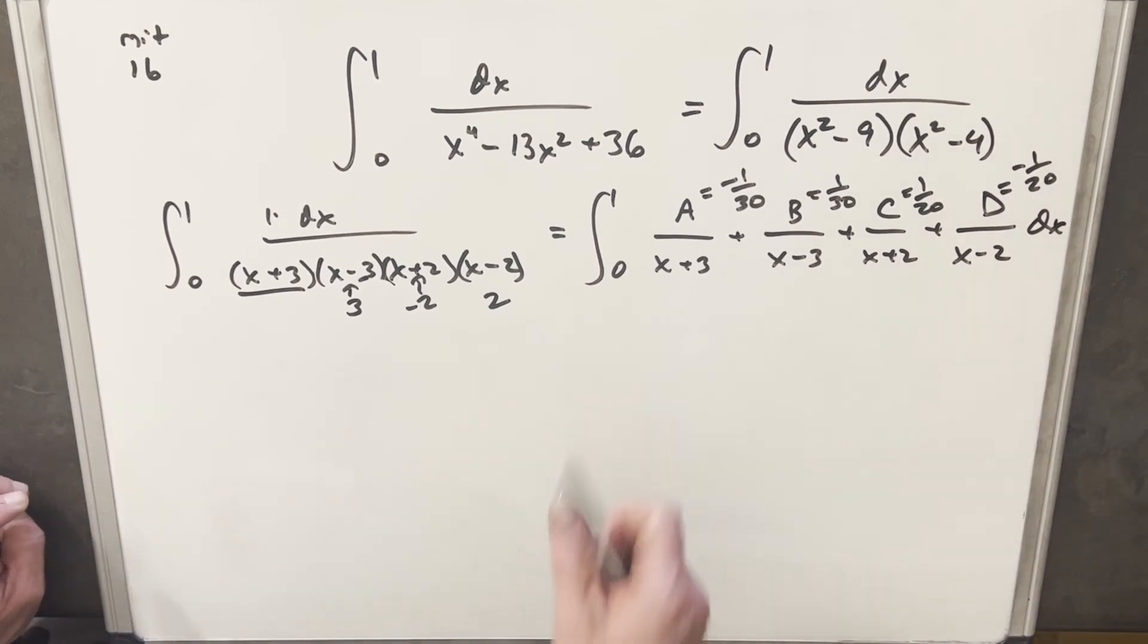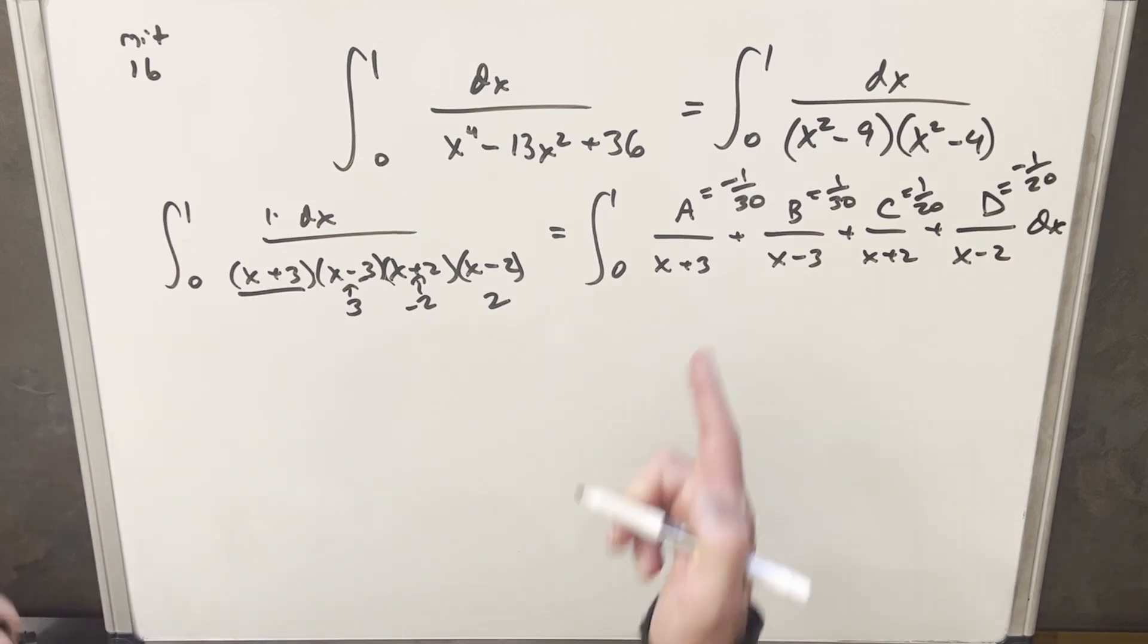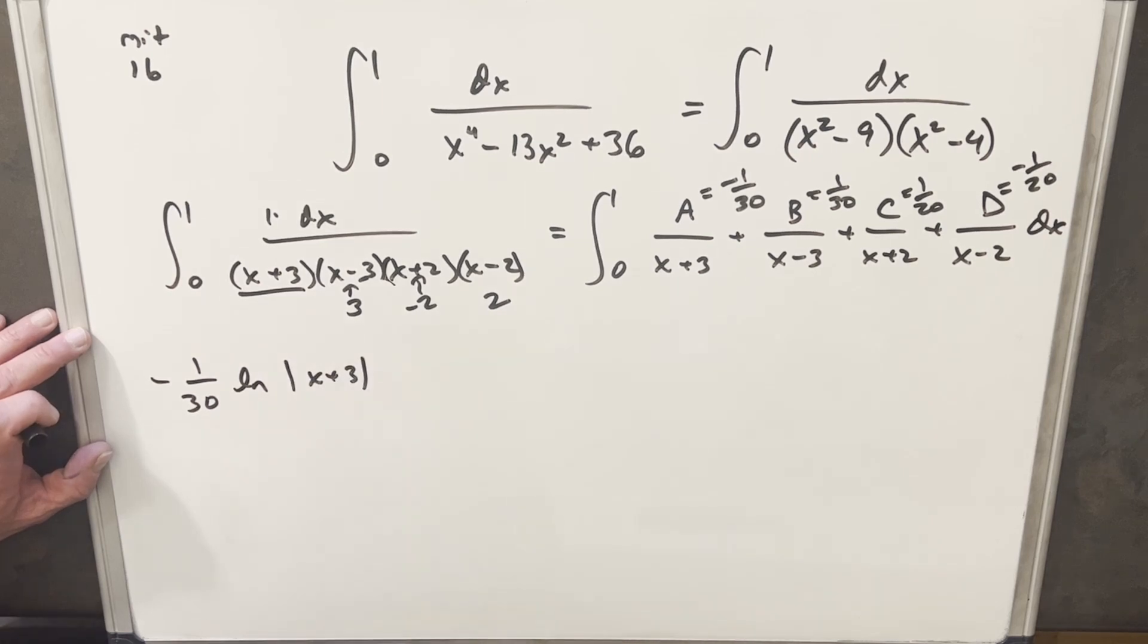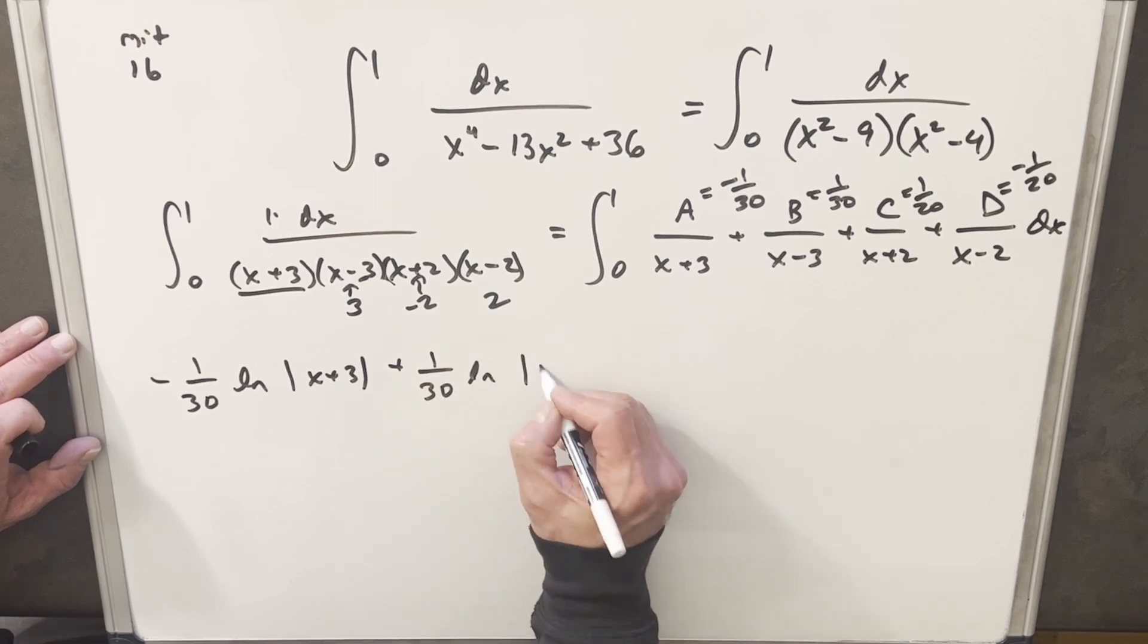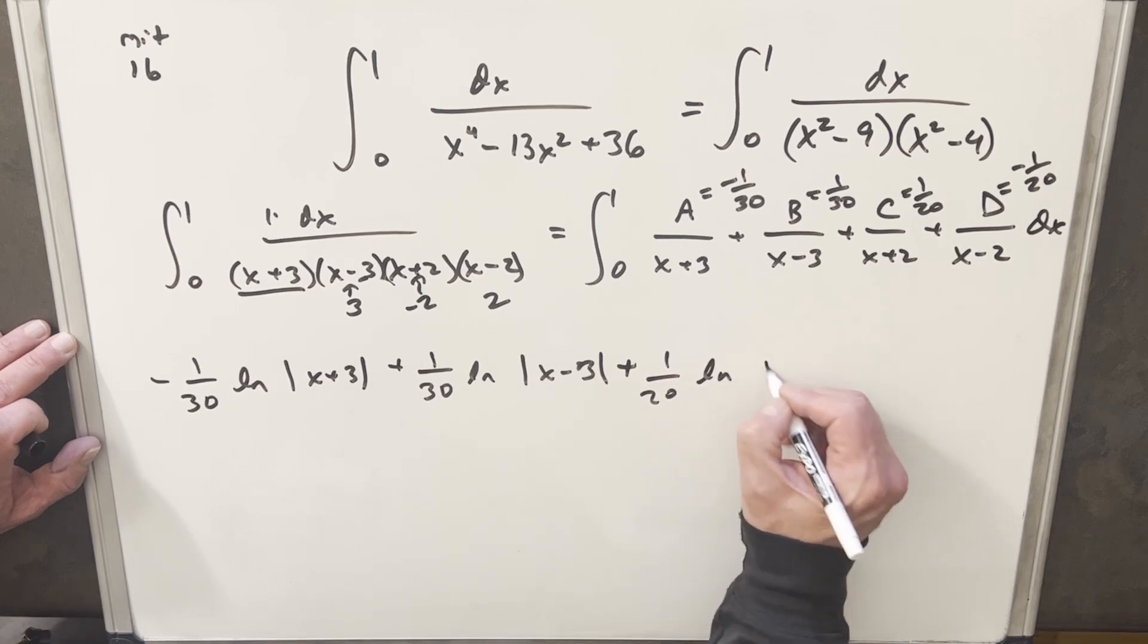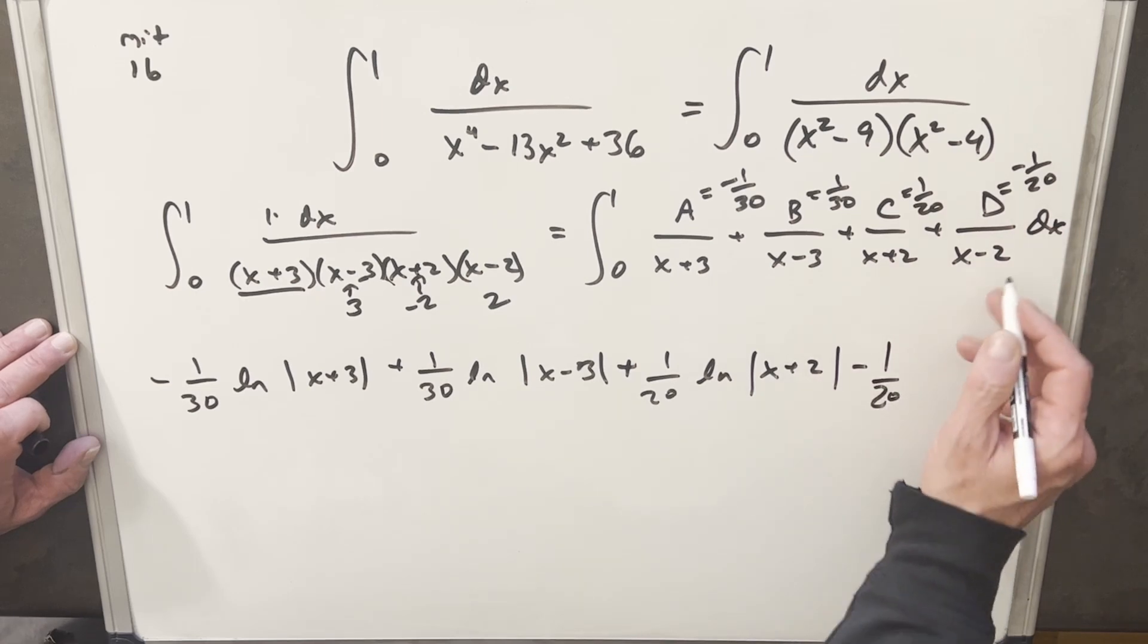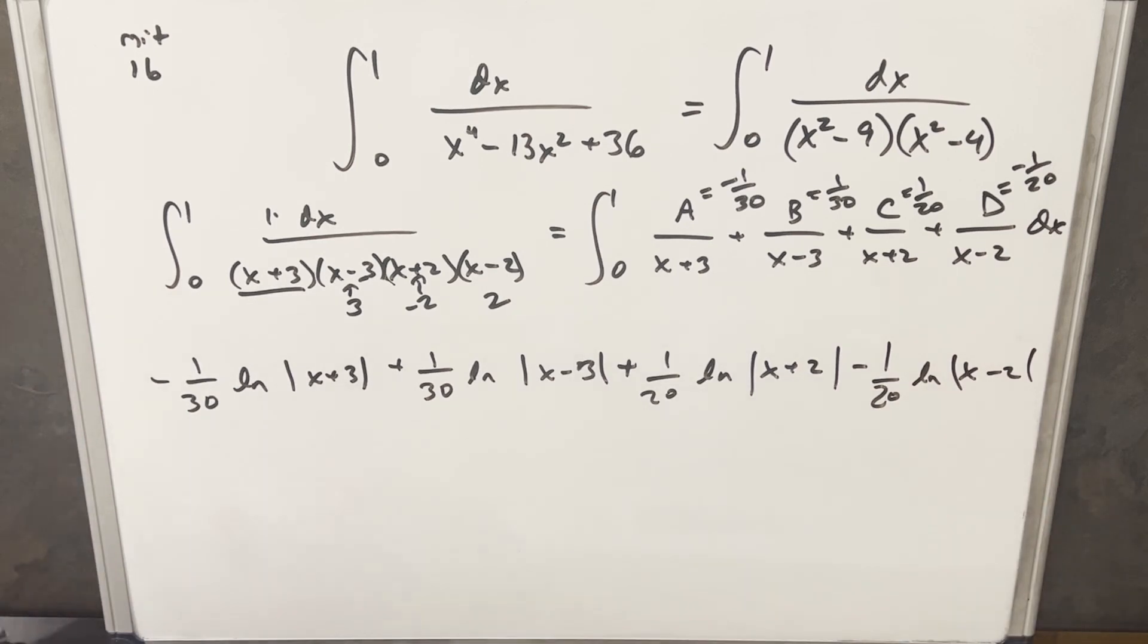Okay, so now I'm gonna go ahead and integrate, and it's gonna be pretty easy. We just have these constant terms, and these are all gonna be natural logs. Like for the first one, we're gonna have minus 1 over 30, natural log, absolute value, x plus 3. Then next we'll have 1 over 30, natural log, x minus 3. Then 1 over 20, natural log, x plus 2. And then minus 1 over 20 here, and this is gonna be natural log, x minus 2. I ran out of space for my bounds, but we'll bring it over.